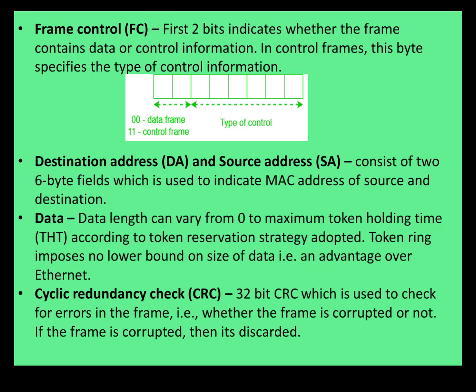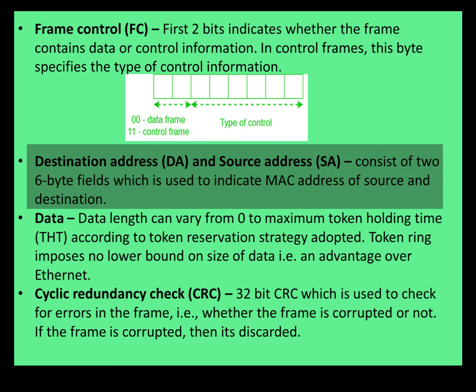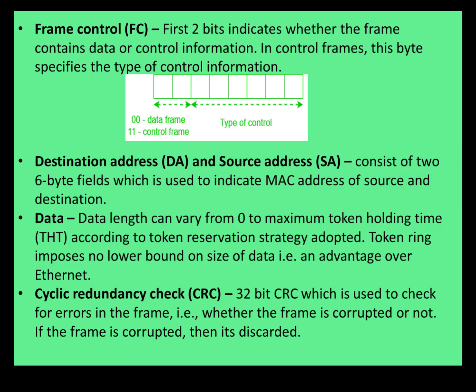Next we have DA and SA, that is Destination Address and Source Address. These fields consist of two 6-byte fields used to indicate the MAC address of the source and destination.